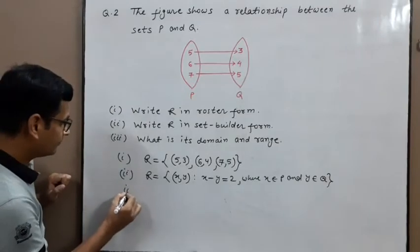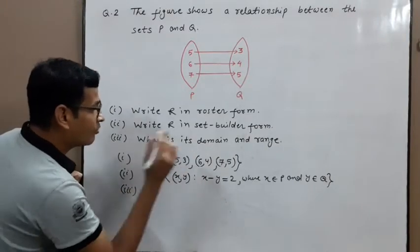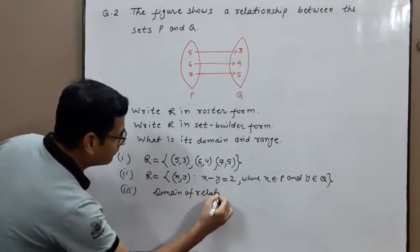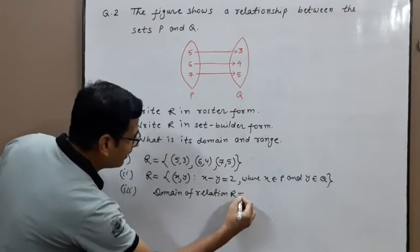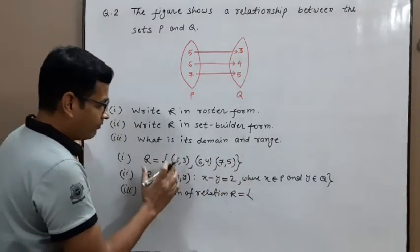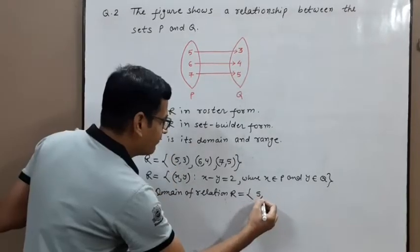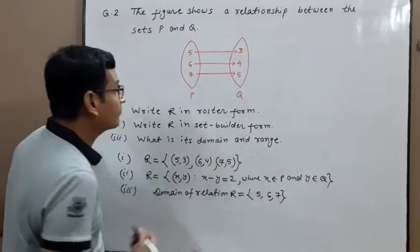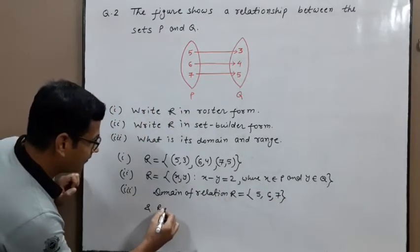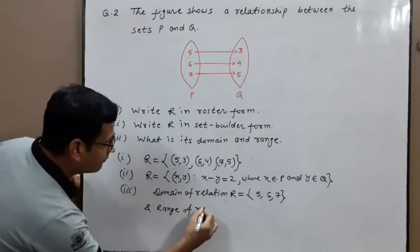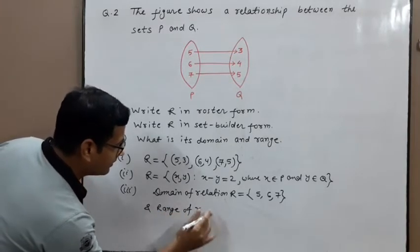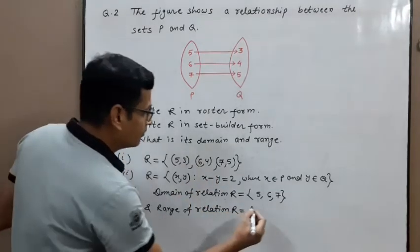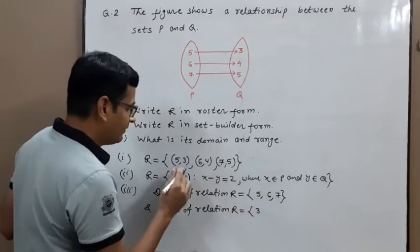Third part: write its domain and range. Domain of relation R is the set of all first elements of ordered pairs in relation R: {5, 6, 7}. Range of relation R is the set of all second elements: {3, 4, 5}.